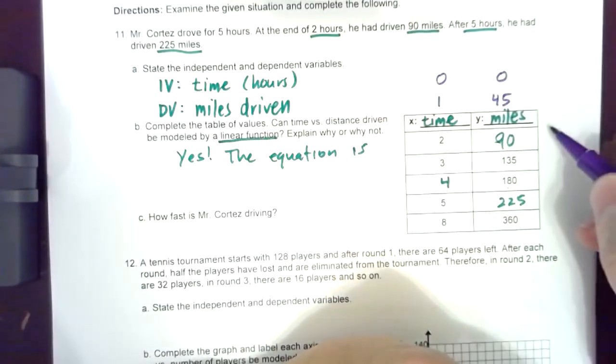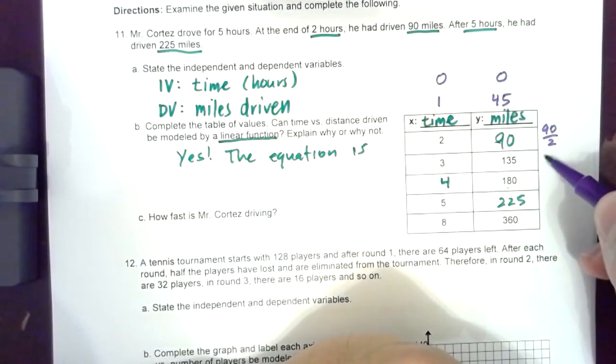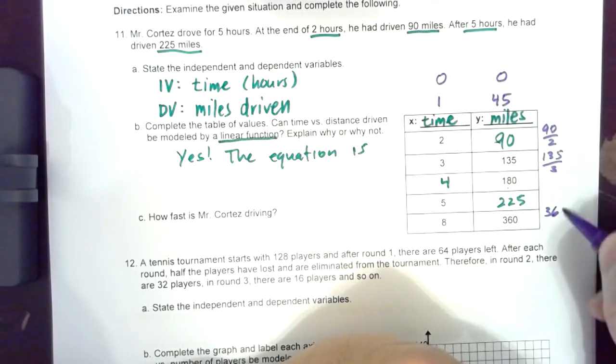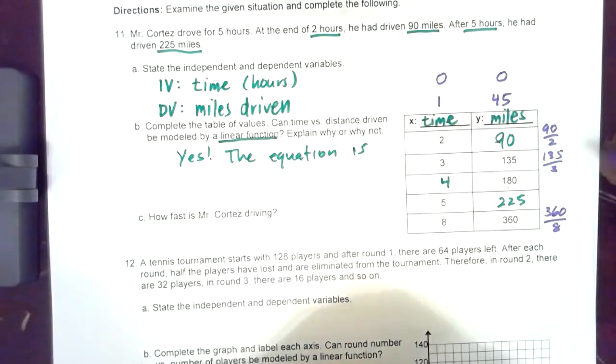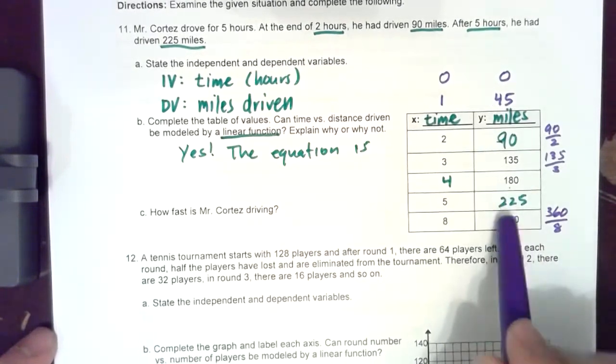And you also know that 90 over 2 is the same thing as 135 over 3 which is the same thing as 360 over 8, so all of the y over x ratios are consistent. That's how you know that this is proportional.